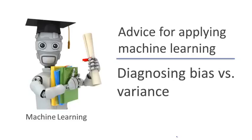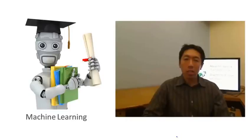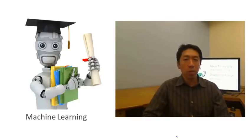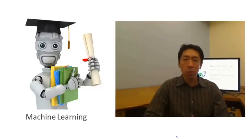If you run a learning algorithm and it doesn't do as well as you were hoping, almost all the time it will be because you have either a high bias problem or a high variance problem — in other words, either an underfitting problem or an overfitting problem. It's very important to figure out which of these two problems you actually have, because knowing that will give a very strong indicator for what are the useful and promising ways to try to improve your algorithm.